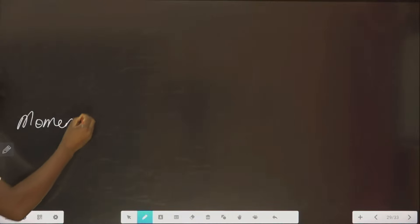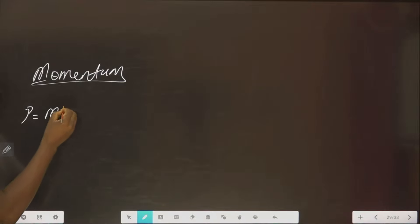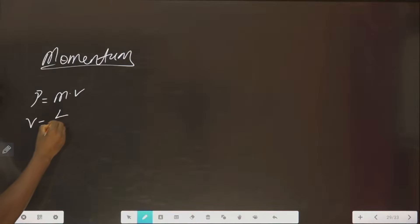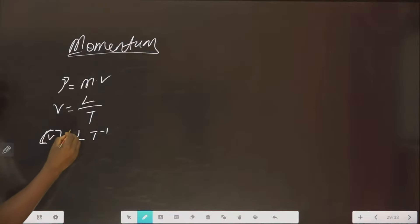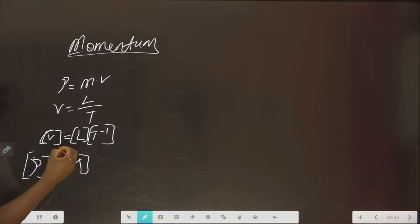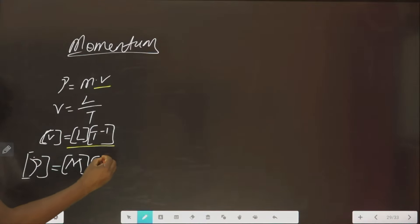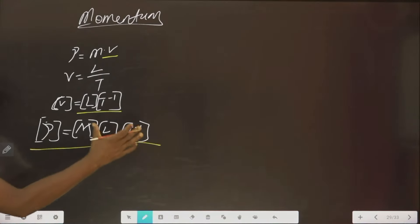What if you are asked to derive the dimension of momentum? Momentum is always equal to mass times velocity. Velocity is L over T, so its dimension is LT⁻¹. The dimension of momentum equals mass (M) multiplied by velocity (LT⁻¹), which gives MLT⁻¹.